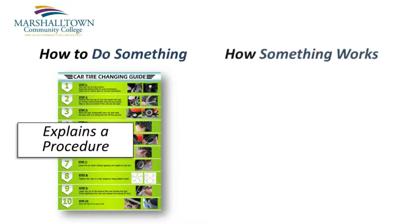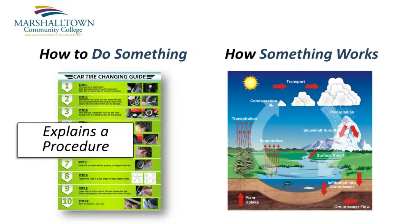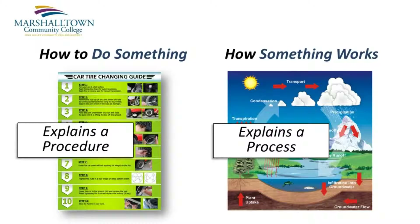In another type of process analysis, you might explain to a reader how something works, which is a little different from how to do something because you're not giving instructions to your reader, you're simply explaining what happens during a process. For example, this chart that explains how water evaporates and is then converted back into rain could certainly be called a process analysis.